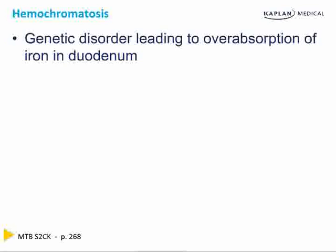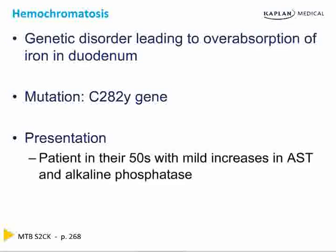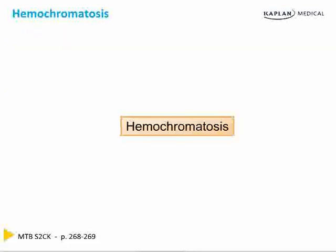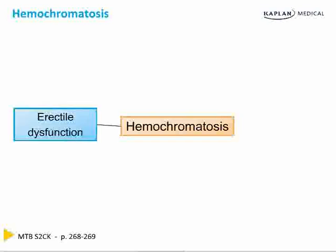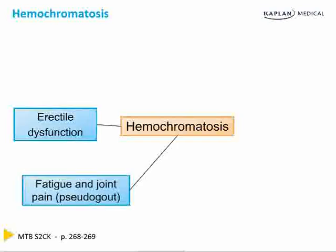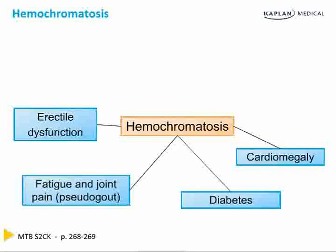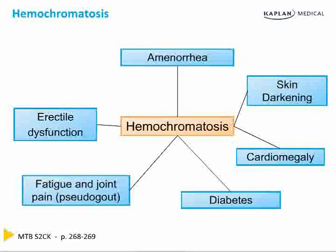Hemochromatosis is a genetic disease leading to over-absorption of iron in the duodenum, caused by a mutation in the C282Y gene. Patients present in their 50s with mild increases in AST and alkaline phosphatase. Clinical manifestations include erectile dysfunction, fatigue and joint pain from pseudogout, diabetes from iron deposition in the pancreas, cardiomegaly, skin darkening, and — if female — amenorrhea.